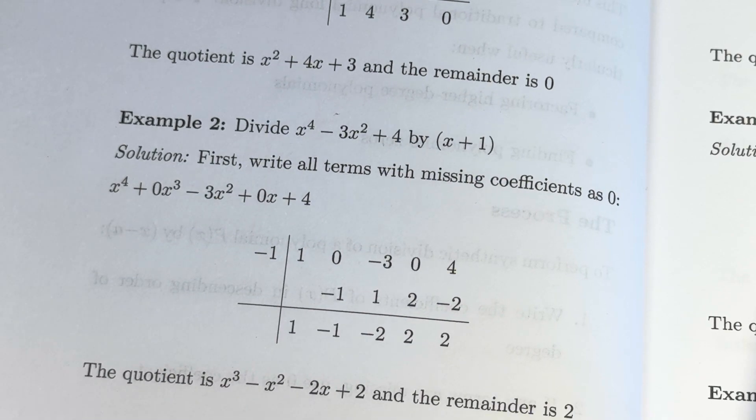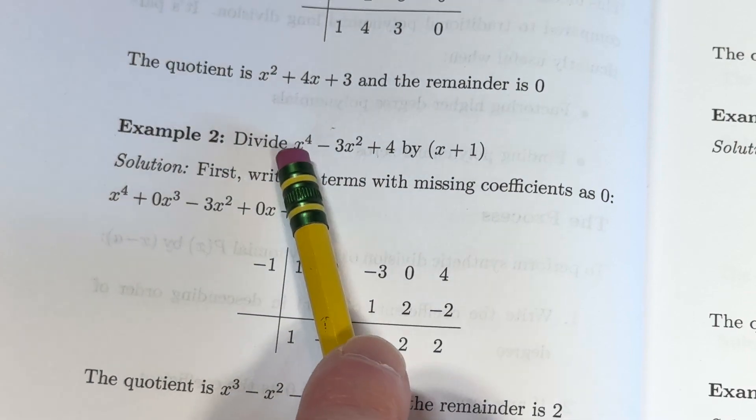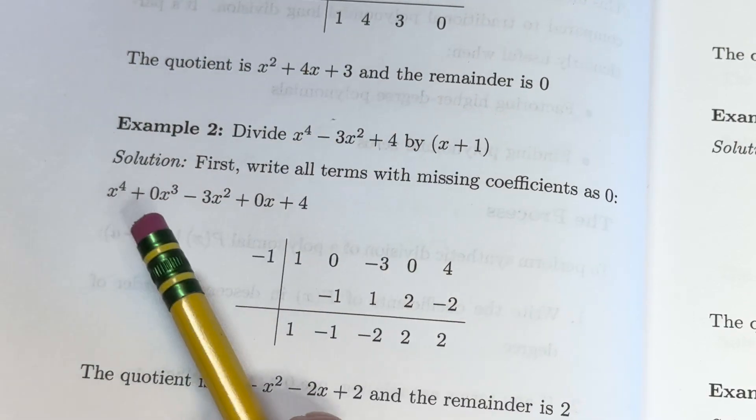In this video, we're going to go over a simple example of synthetic division. We're going to divide x to the fourth minus 3x squared plus 4 by x plus 1.